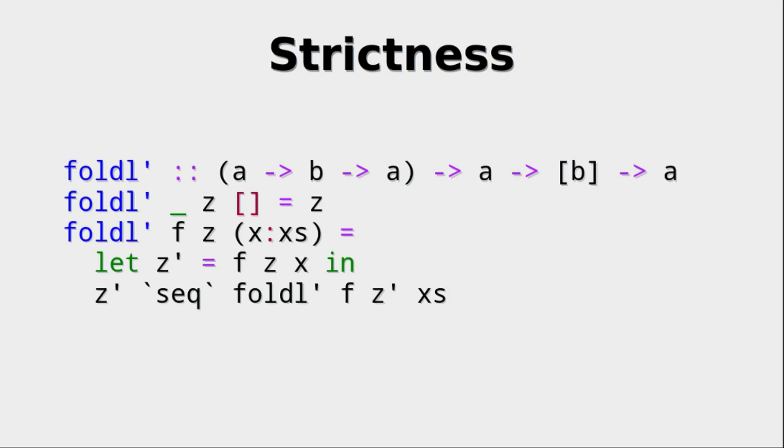we build z prime, which is the application of the function to the accumulator and the value x. And then we use seq. So z prime is the a of seq, and the recursive call is the b of seq. So what is happening? Well, we force the evaluation of z prime, and then we do the recursive call. And that is why no thunk is built within the accumulator, we force the evaluation of it.